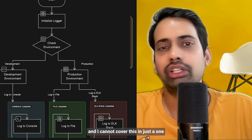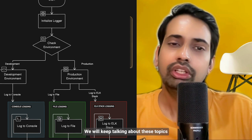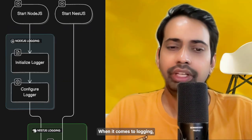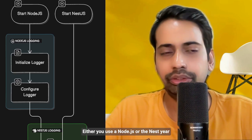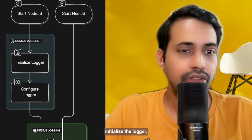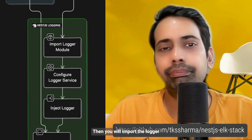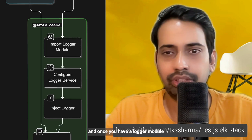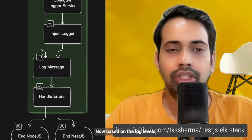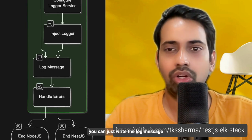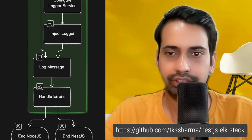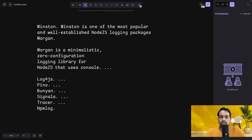This is a series, so we'll keep covering these topics. When it comes to logging it's the same approach whether you use Node.js or NestJS: use a logging library like Winston, initialize the logger, configure it, then import the logger module and configure the logger service. Once you have the logger module and logger service, you can inject that service inside any module and write log messages based on log levels while handling errors.